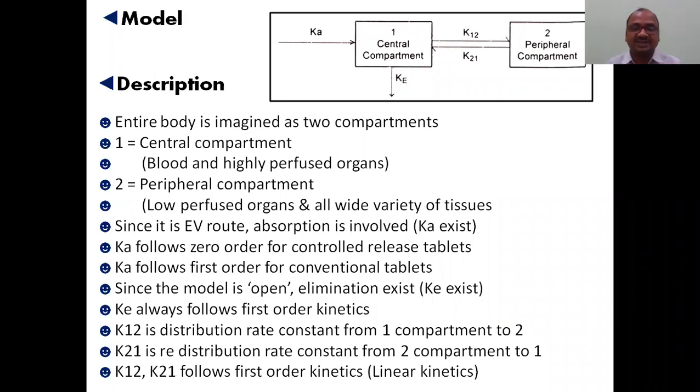Since the model is open, Ke always exists. Ke is elimination rate constant, it always follows first order kinetics. K12 is distribution rate constant from first compartment to second compartment. K21 is redistribution constant. These K12 and K21 always follow first order linear kinetics. First order kinetics are also called linear kinetics.